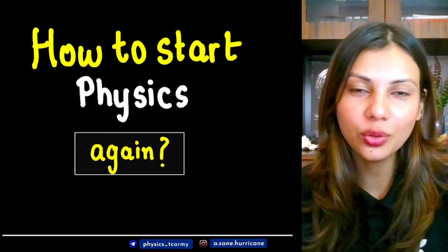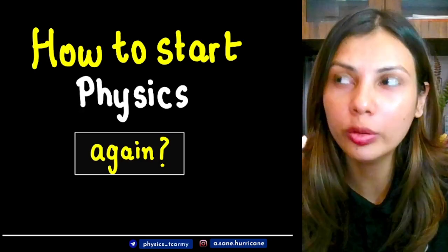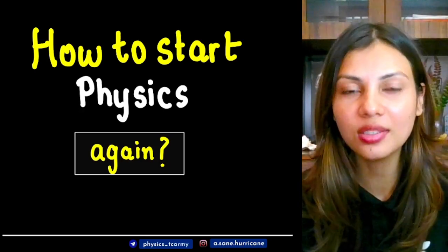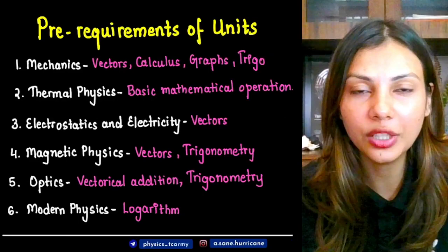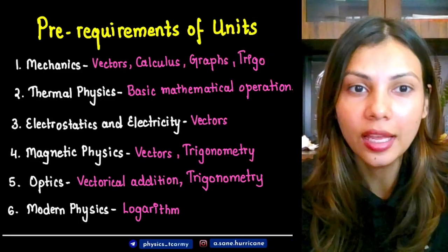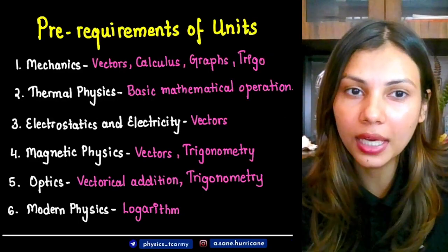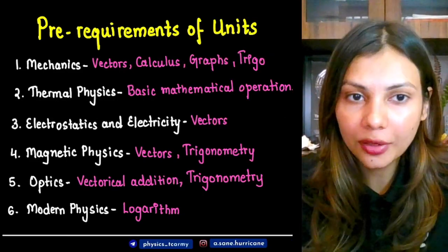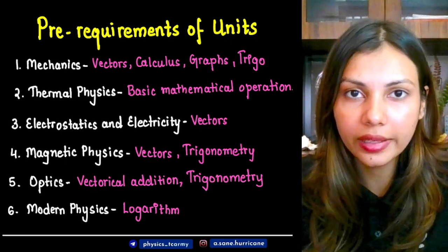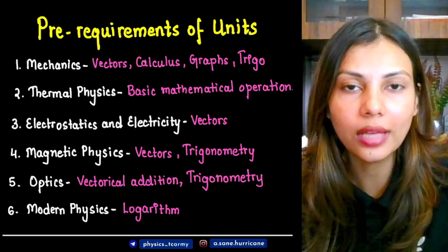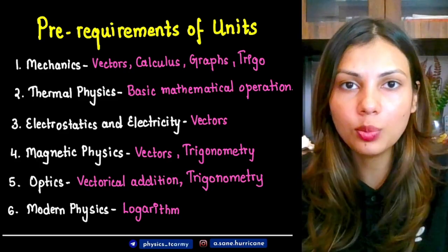What I am trying to say is, if someone needs to cover physics, they have 6 units: mechanics and thermal physics, electrostatics, magnetic physics, optics, modern physics, and electricity — which is class 12th physics.